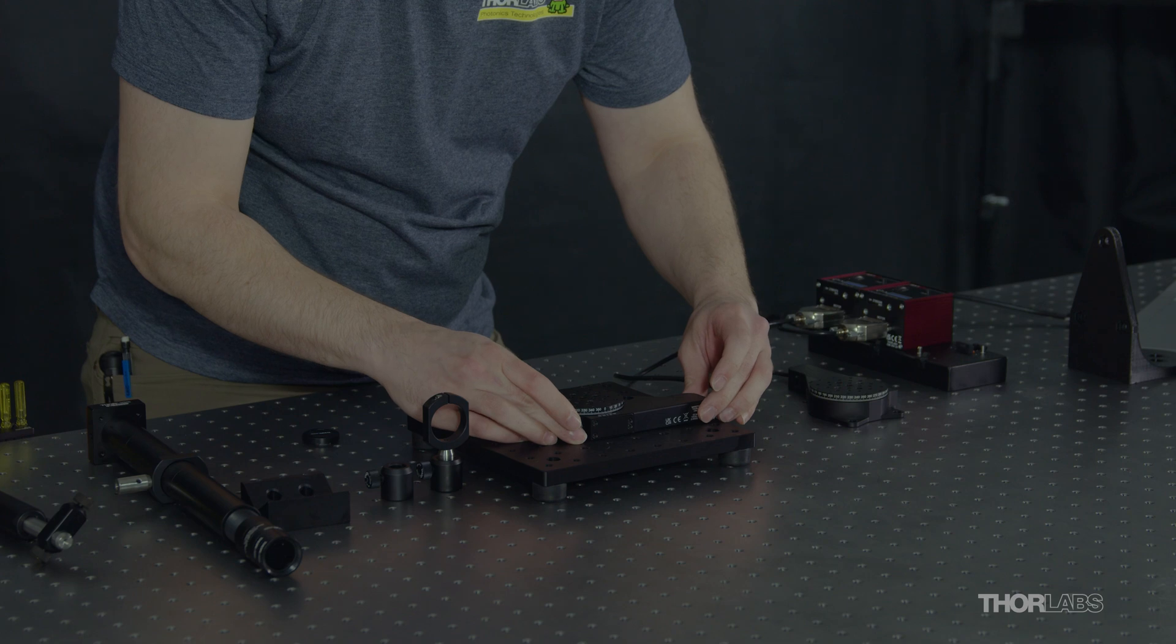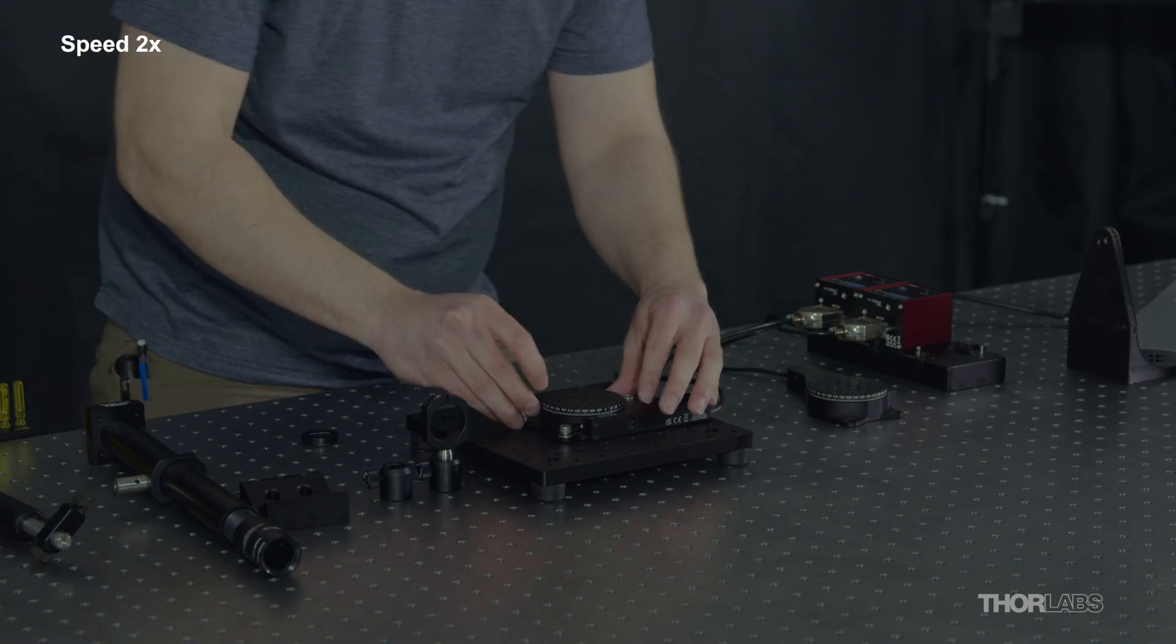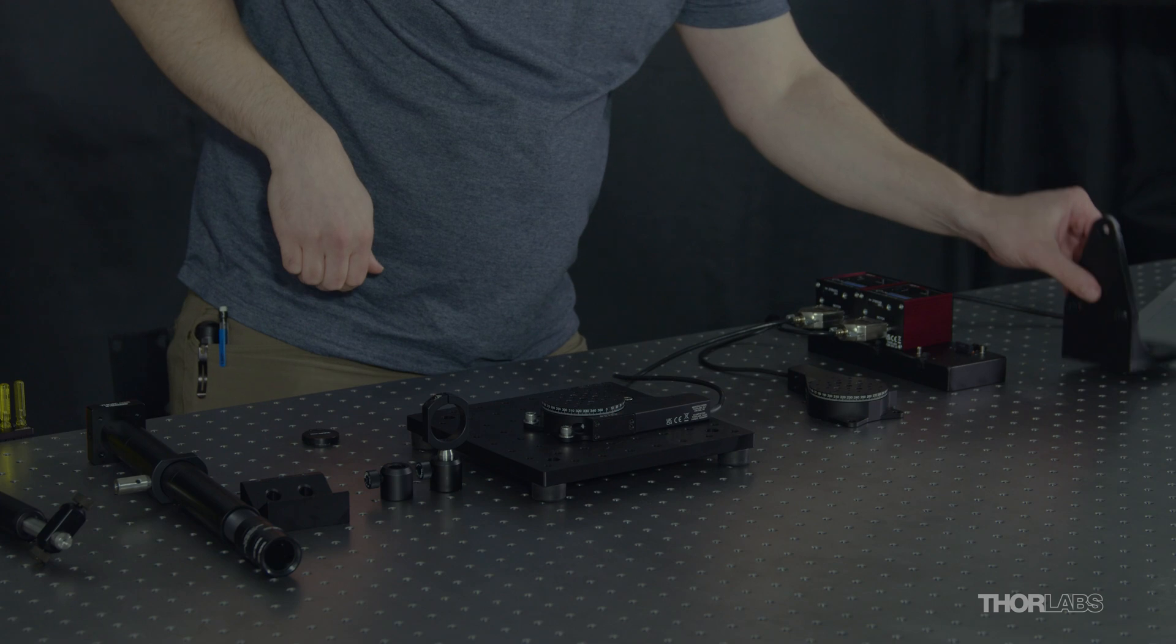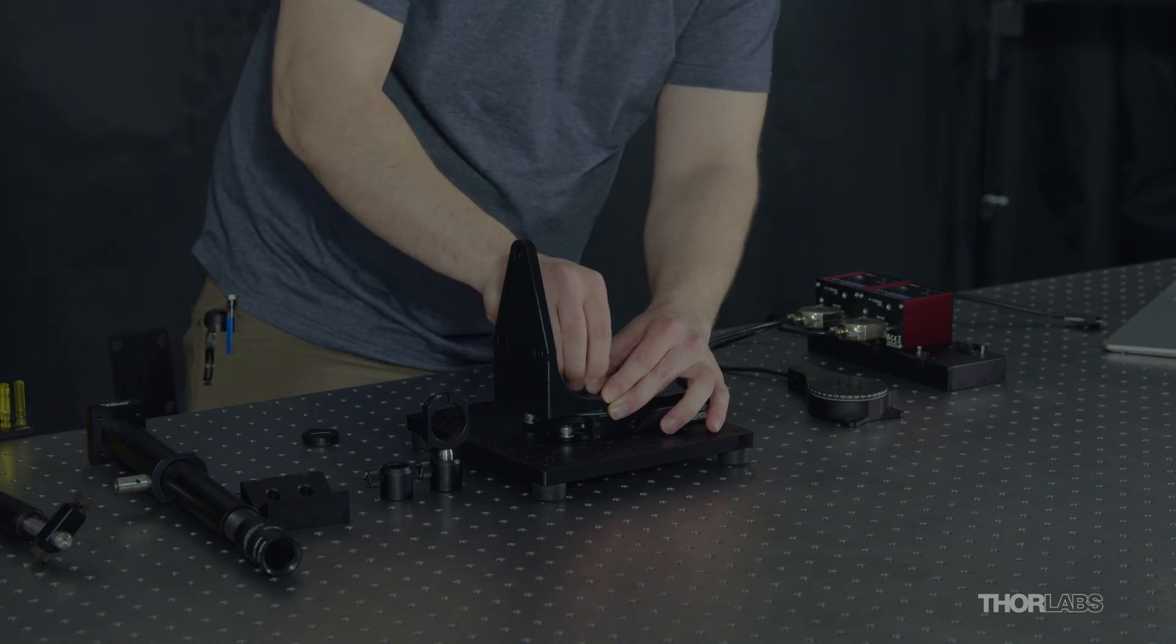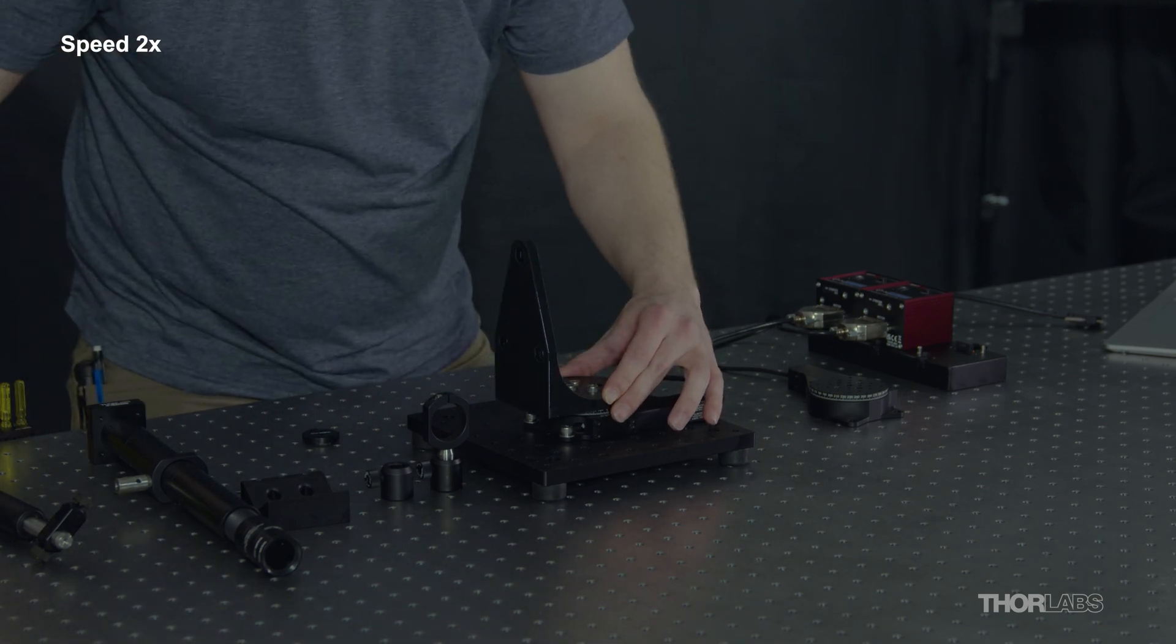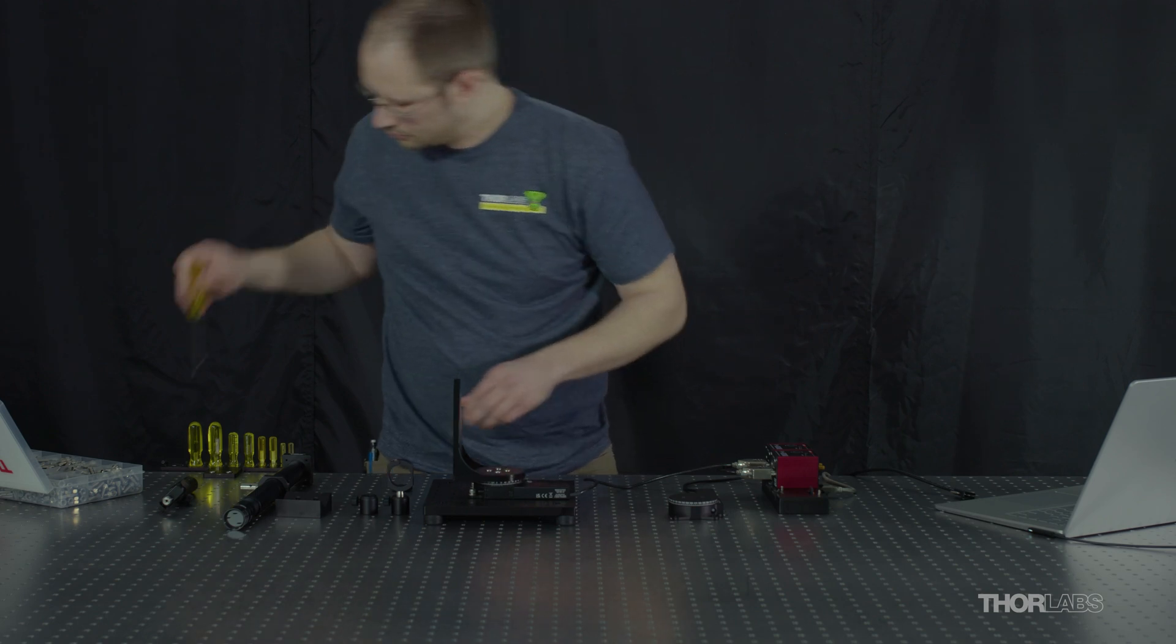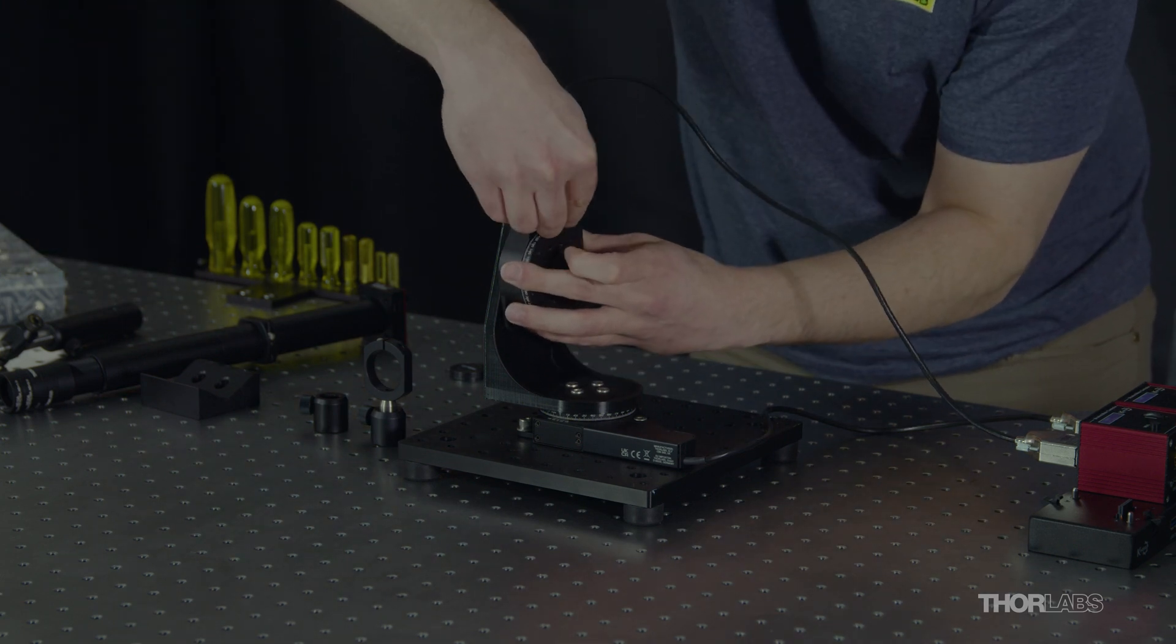I'll mount the azimuth axis relatively centered on the breadboard. Next, I'll mount the 3D printed adapter bracket. Once that's in place, I can mount the elevation axis stage.